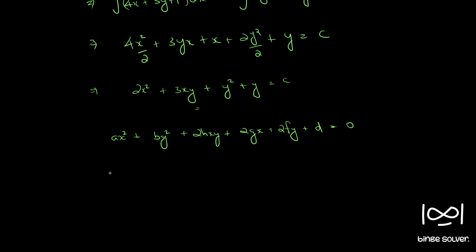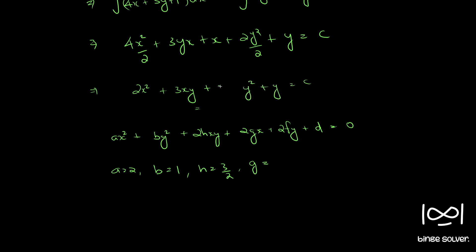Comparing our solution with the general form, we get: a equals 2, b equals 1, h equals 3 by 2, g equals 1 by 2, f equals 1 by 2, and d equals minus c.